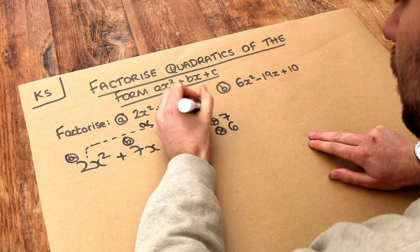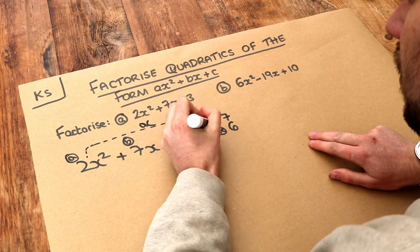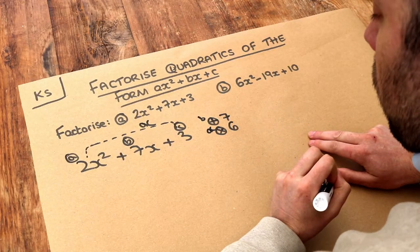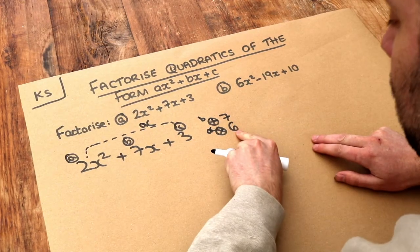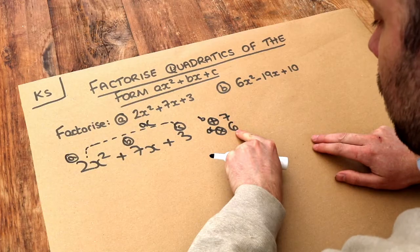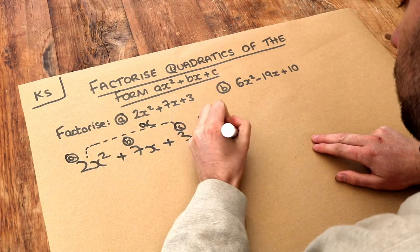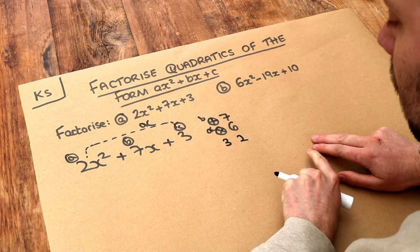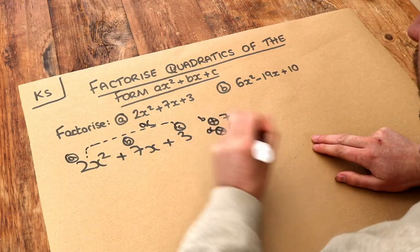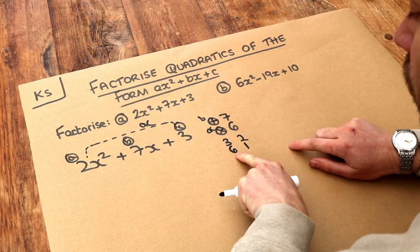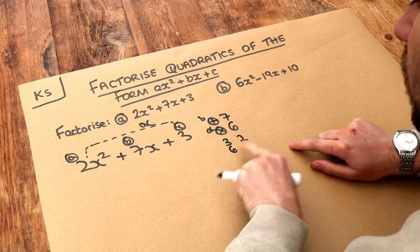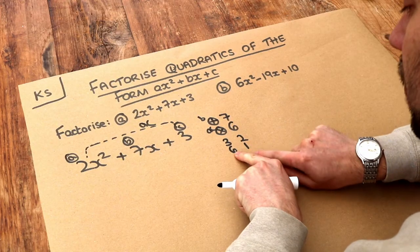So they add to give the B, and they multiply to give AC. So let's think about numbers which multiply to give 6. Well, we've got 3 and 2 multiply to give 6, but they don't add to give 7, do they? Or we've got 6 and 1. They multiply to give 6. Do they add to give 7? Yes, they do.